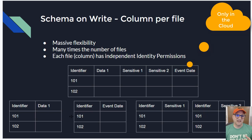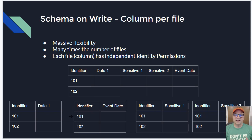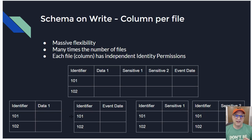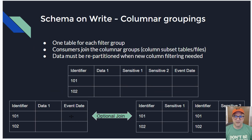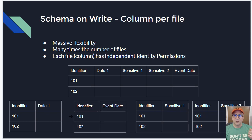One thing to point out is this is a really different approach if you haven't done it before — we're shaking off our relational database mentality. If we have a completely blank slate with the restriction that the entire file is fetched or it's not, and we want to use the cloud provider's controls, what would we do? It may be that the more cloud-native solution is to do schema on write. That could mean individual schemas for each consumer type, columnar groupings with permissions arranged on those where each consumer group gets a subset, or column per file — blowing the whole thing out and using unlimited compute to put it all back together.